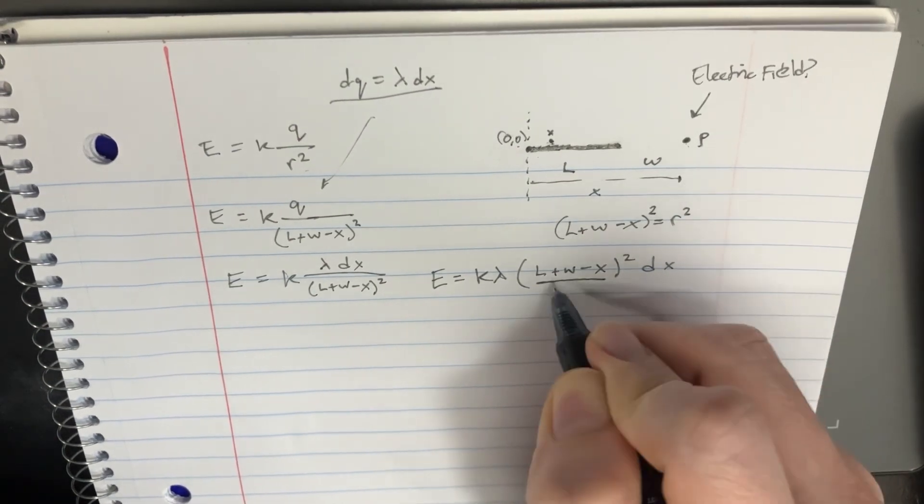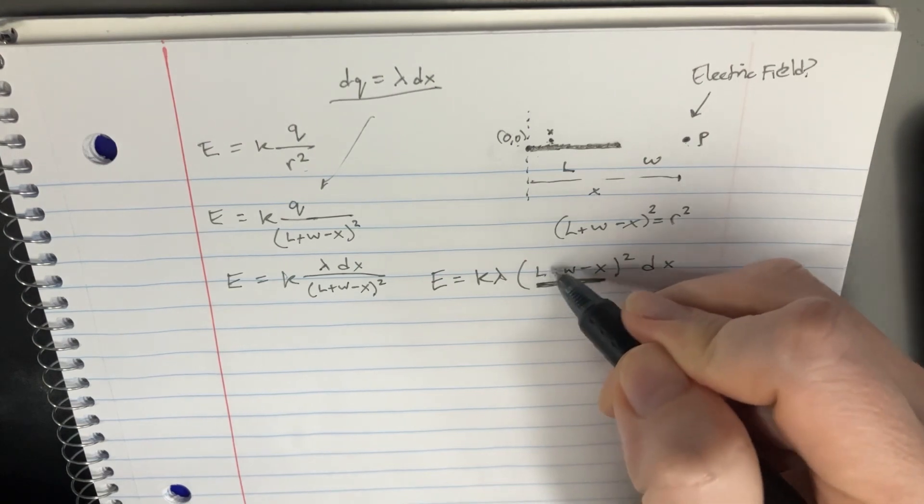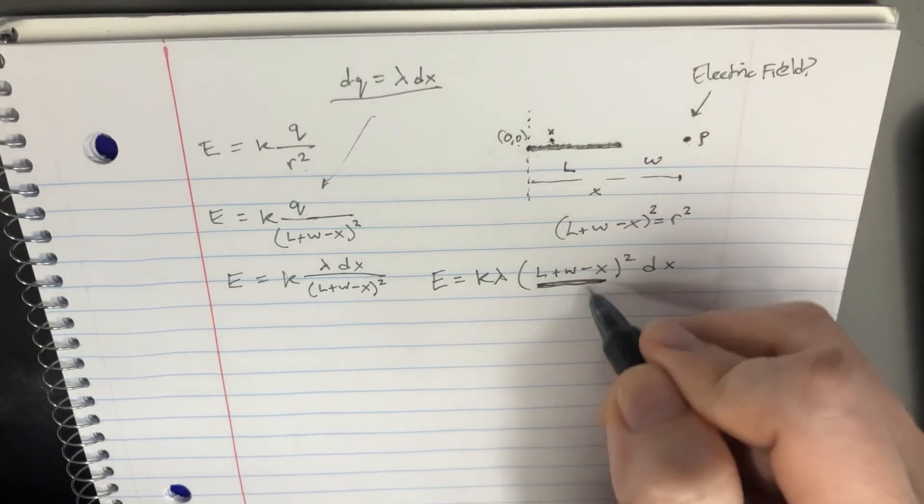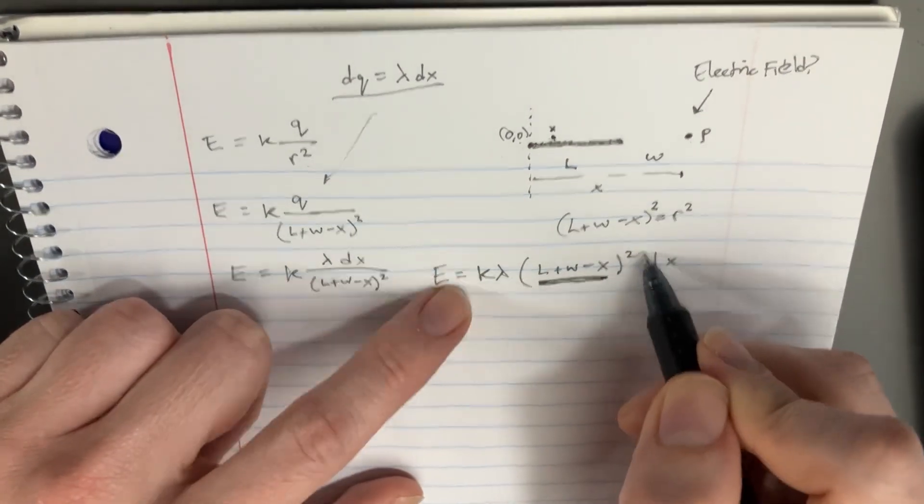What is the derivative of what's inside of this, considering that these are just constants? The derivative is negative 1, okay? So keeping that in mind, let's integrate this.